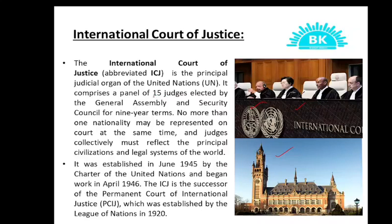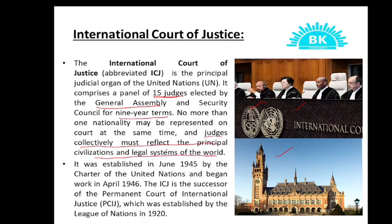There are 15 judges, all elected by the General Assembly, each for 9-year terms. Not more than one nationality may be represented on the court — the 15 judges should be from 15 different countries; no country should have 2 judges at a time. All of these judges must collectively reflect the principal civilizations and legal systems of the world. They do not work for their respective countries — they work for the whole world, for the UN. It is a world court.